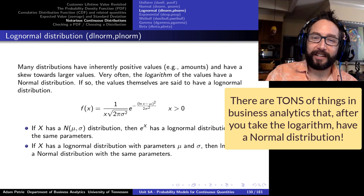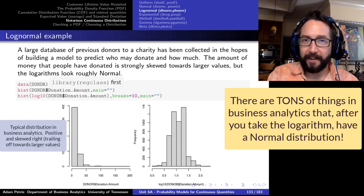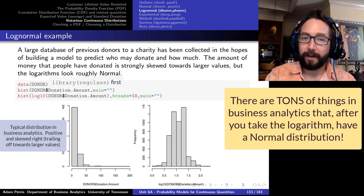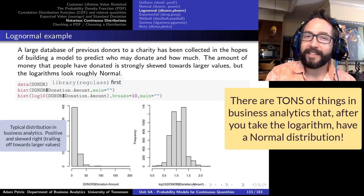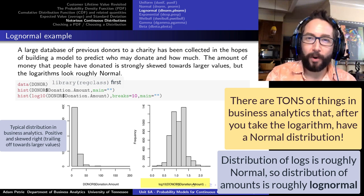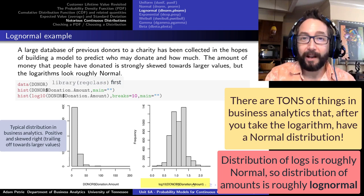Let's see that in action. Looking at donation amounts made to a veteran's charity — firing up the regclass library and loading the donor dataset — a histogram of donation amounts shows what we very often see in business analytics: a peak at lower values with a long right-hand tail, a strong right-handed skew. But if we make a histogram of the logarithms of those donation amounts, we find it is roughly symmetric, peaking around one. This is a prime case where the log normal distribution is a good fit.